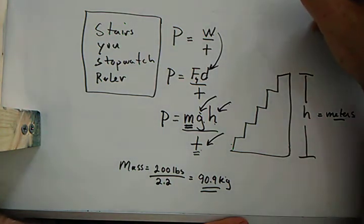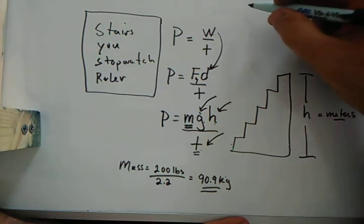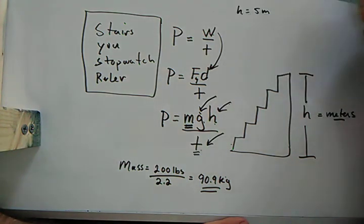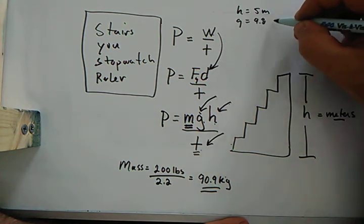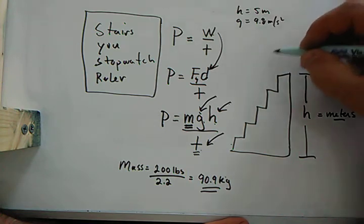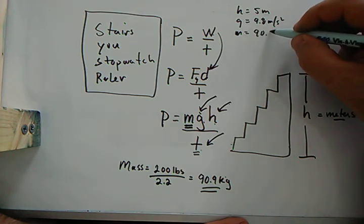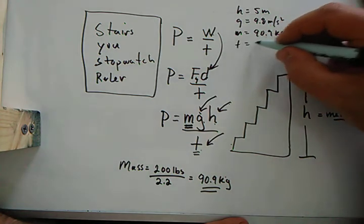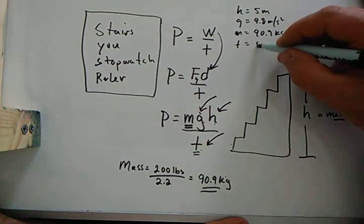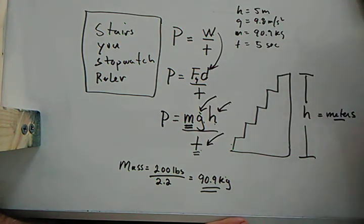So a little sample calculation up here. Let's say this takes me, let's say the height is 5 meters. I'm going to start down here. Height is 5 meters. Let's say we know gravity, right, 9.8 meters per second squared. My mass is 90.9 kilograms. And let's say I can do all this in five seconds. Okay, so in five seconds I can do all this.